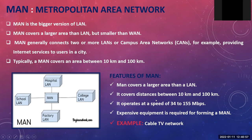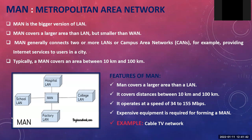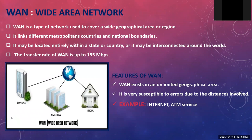MAN covers a distance of 10 to 100 kilometers with a data speed of 34 to 155 Mbps, and requires expensive equipment. An example is a company with different branches in the same city — connecting the computers of those branches to each other forms a MAN. Similarly, two or three branches of a school, hospital, or department store connected within one city is a Metropolitan Area Network.